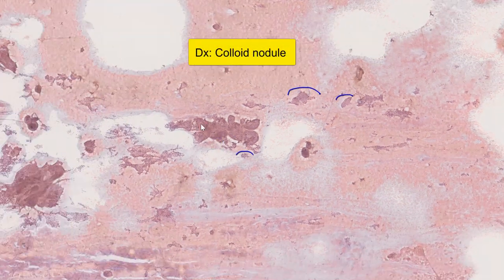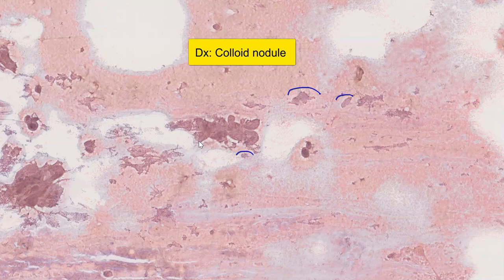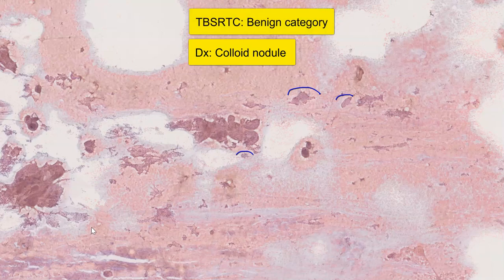So this is an example of a colloid nodule. We have intact tissue fragments composed of follicles, flat honeycomb sheets of follicular cells, and abundant thin colloid in the background. This would be classified in the Bethesda system into the benign category.